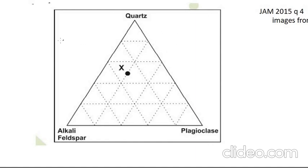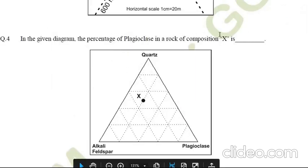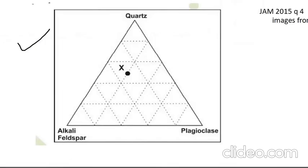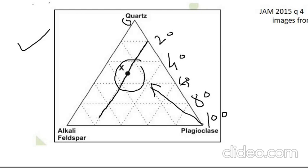Going back to the actual question figure — we are asked for the percentage of plagioclase in the rock of composition X. From the P apex: 100, 80, 60, 40, 20 — in this entire line, the amount of plagioclase is 20%. So 20% is the answer.